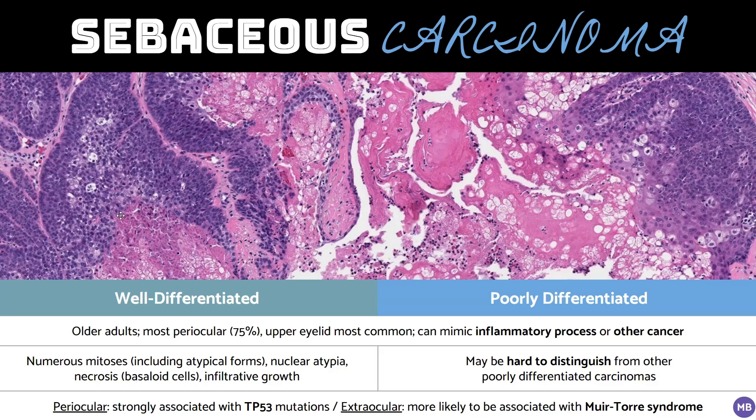Some cases of sebaceous carcinoma are associated with Muir-Torre syndrome, especially if they are poorly differentiated and located away from the head and neck in a patient under 50 years old. In contrast, well-differentiated sebaceous carcinomas are strongly associated with TP53 mutations.